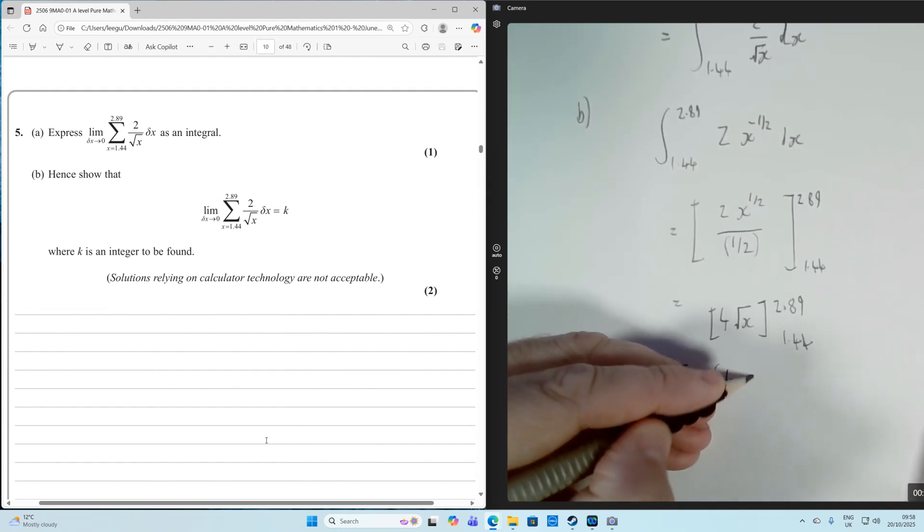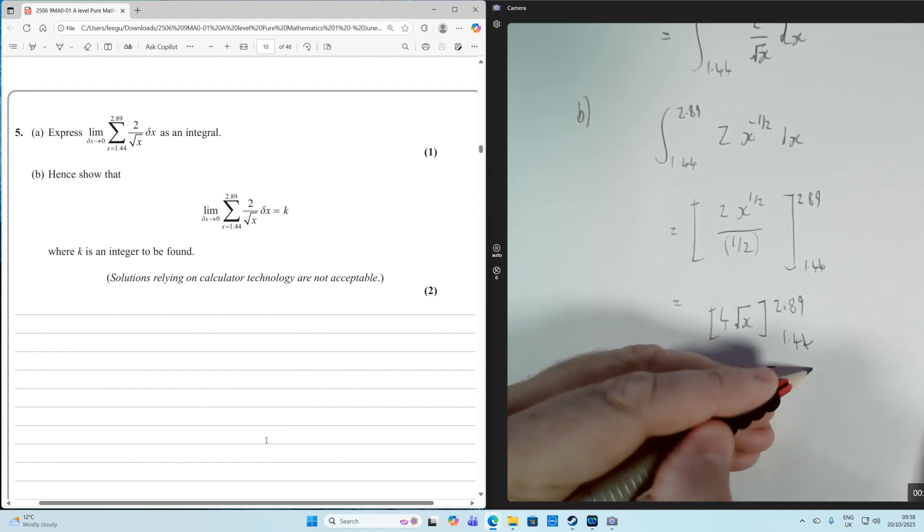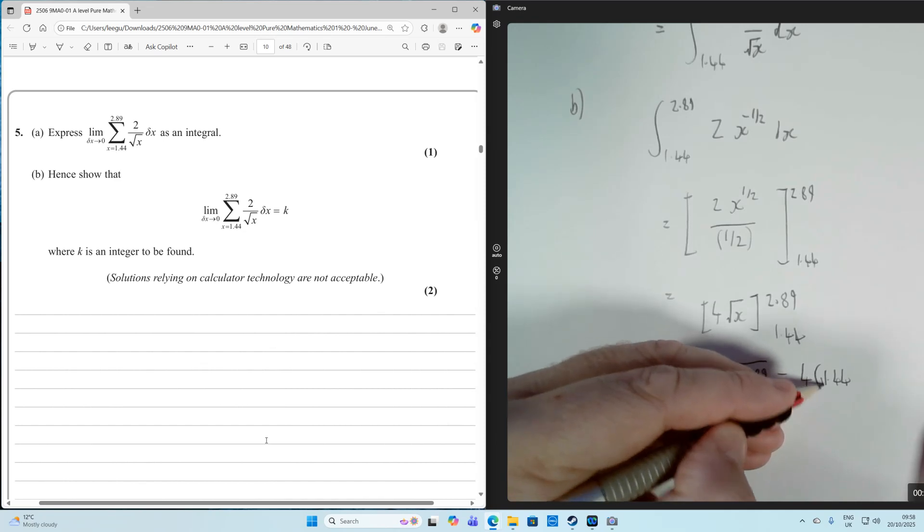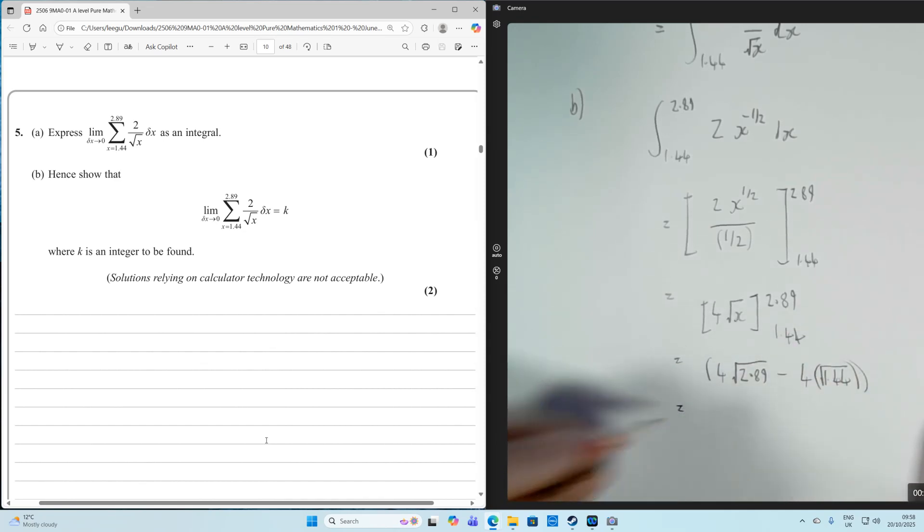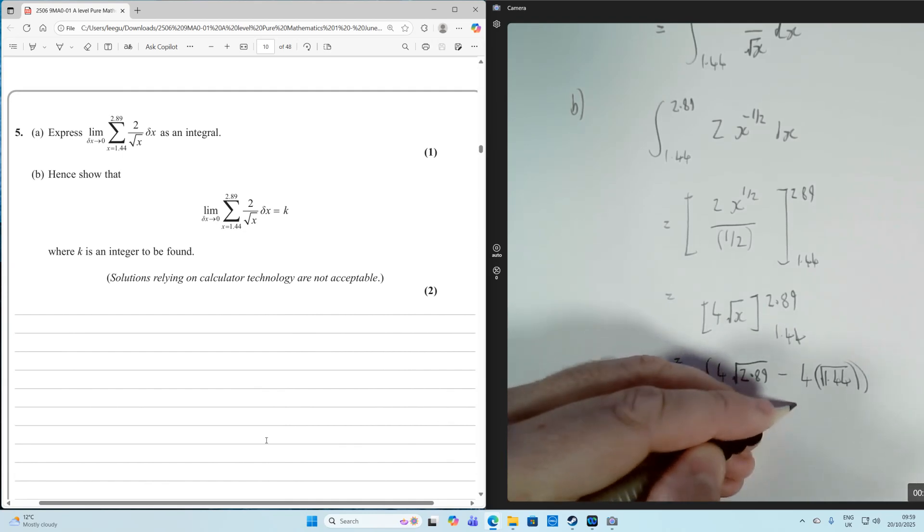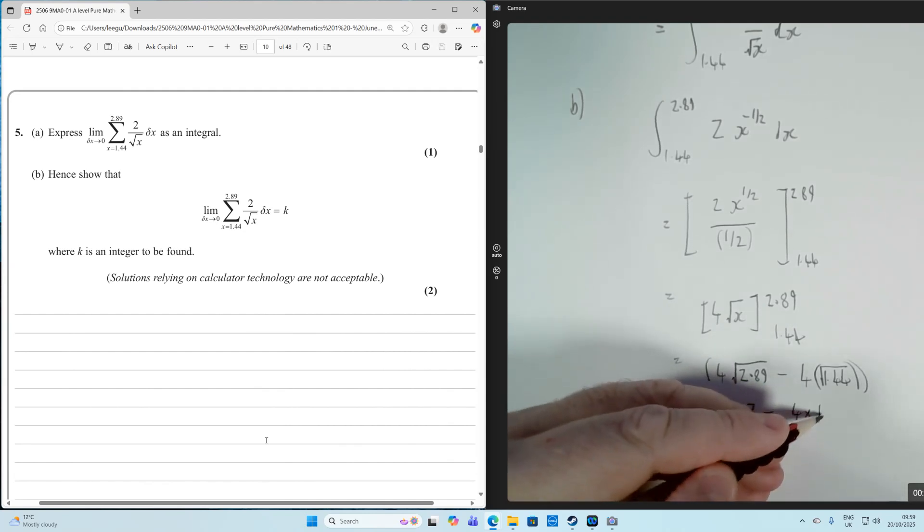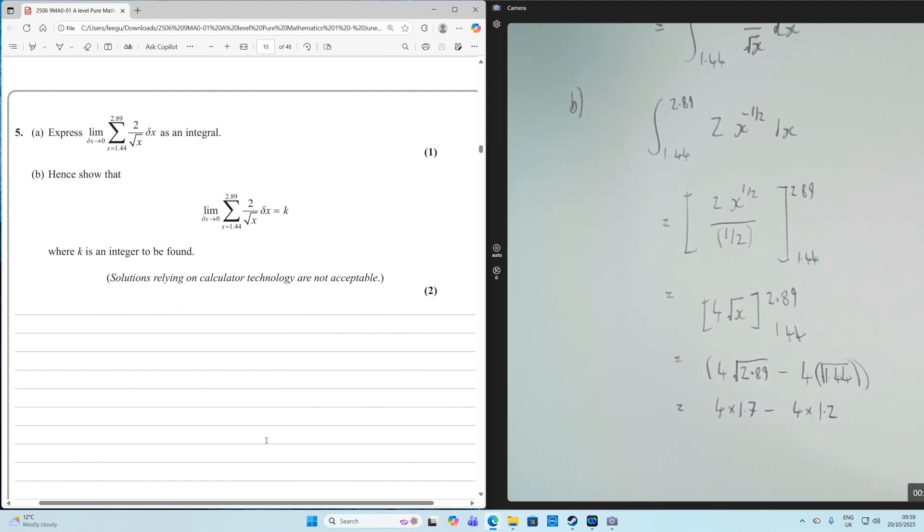So that means that's going to be 4 times 2.89 square rooted minus 4 times 1.44 square rooted. And let's see what we get when we evaluate that. So the root of 2.89 is equal to 1.7. So we have 4 times 1.7 minus 4 times 1.2.